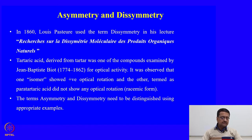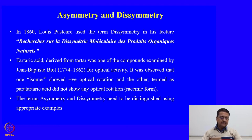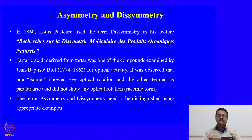Before Pasteur's identification of disymmetric molecules, tartaric acid derived from tartar was one of the compounds examined by Biot in his early days for optical activity. It was observed that one isomer showed positive optical rotation and the other isomer, termed para-tartaric acid, did not show any optical rotation, which means that was a racemic mixture. So the terms asymmetry and disymmetry need to be distinguished using appropriate examples.